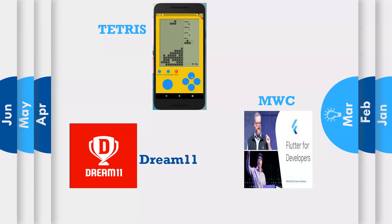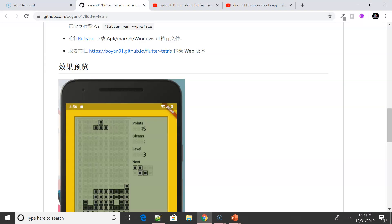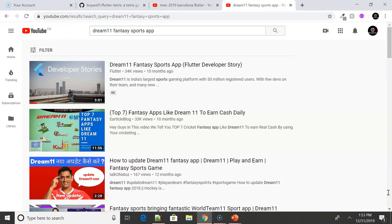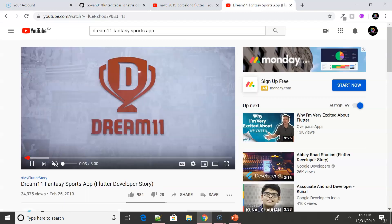Moving on to March, we had a couple of awesome updates. The first one was the Tetris game — I grew up playing this game a lot, so it was something very special to me. When I found that someone had developed it using Flutter, I was really thrilled. It's been developed by one of the Flutter developers and has been open sourced.